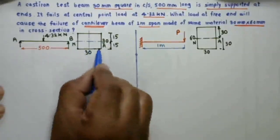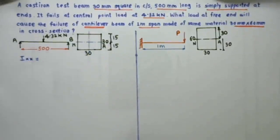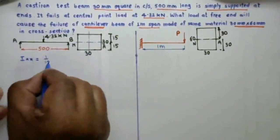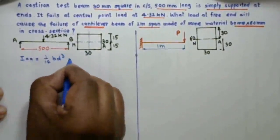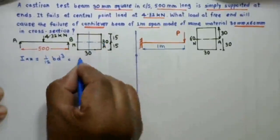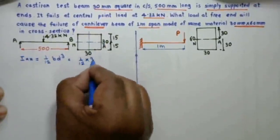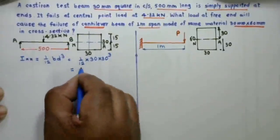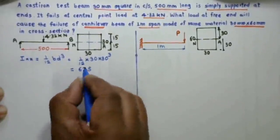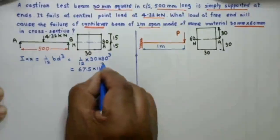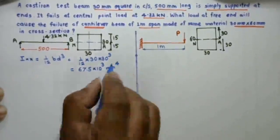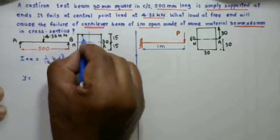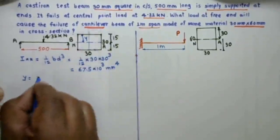For case one, this is a square section, so the moment of inertia is (1/12)bd³. Here b = 30 mm and d = 30 mm, so moment of inertia about the centroidal axis becomes 67.5 × 10³ mm⁴. The distance y from the neutral axis to the outer fiber is y = 15 mm.